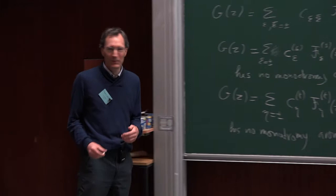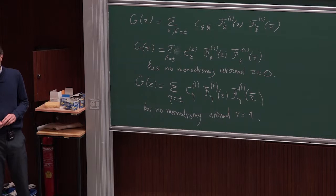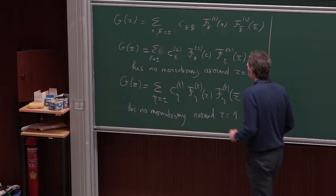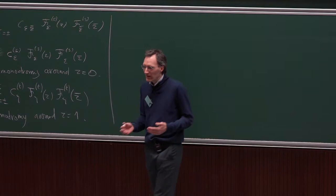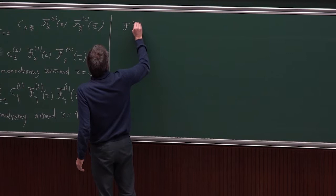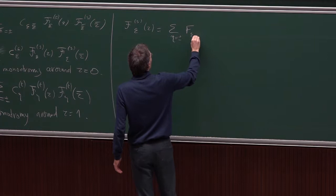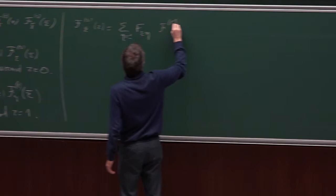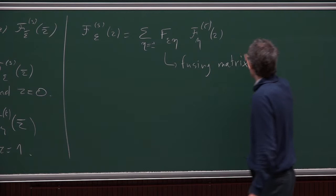These two expressions must coincide — that's crossing symmetry. The S-channel and T-channel blocks are two bases of solutions of the same two-dimensional space. They are related by the fusing matrix F: F^S_ε(z) = Σ_η F_{εη} · F^T_η(z). The fusing matrix is just the change-of-basis matrix for conformal blocks.